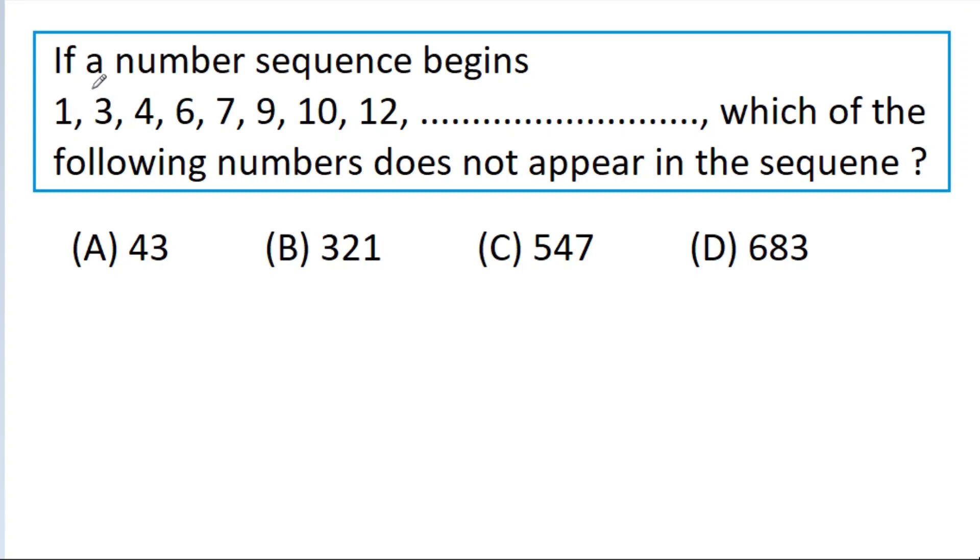In this video, we have given a number sequence 1, 3, 4, 6, 7, 9, 10, 12 and so on. Then, which of the following numbers does not appear in this sequence?